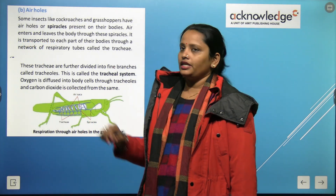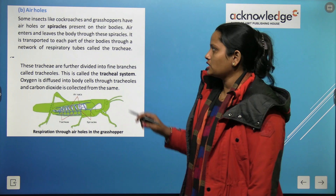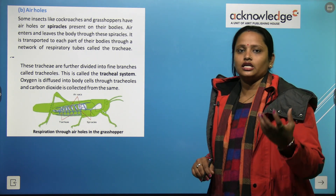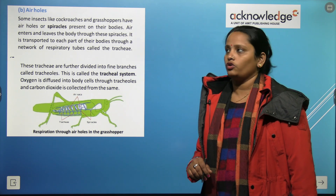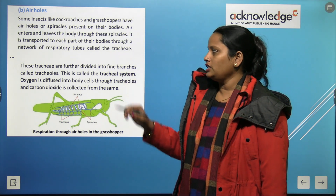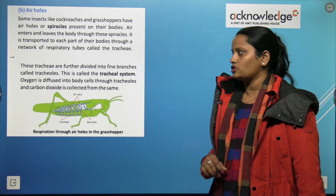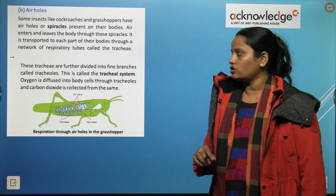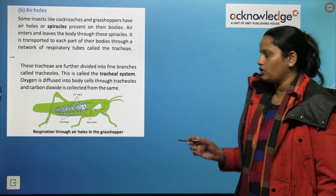Some insects like cockroaches and grasshoppers have air holes called spiracles. Air enters and leaves the body through these spiracles and is transported to each part of the body through respiratory tubes called the trachea. These trachea are further divided into fine branches. Oxygen diffuses into body cells through the trachea, and carbon dioxide is expelled through the same system.